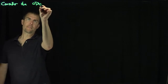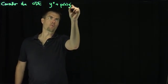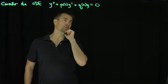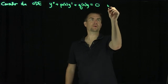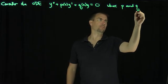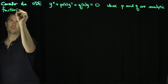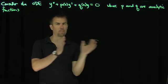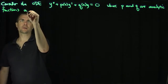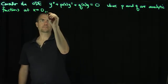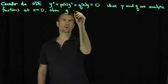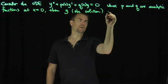Hello, students. In this video, we'll prove that a second-order differential equation has a power series expansion in an interval around an ordinary point. Let's consider the ODE: y double prime plus p of x, y prime, plus q of x, y equals 0. And let's assume that p and q are analytic functions, which means that p and q have power series in a neighborhood of the origin. We're going to do this in the neighborhood of the origin — you can shift this to any ordinary point. If p and q are analytic at x equals 0, then y, the solution, is analytic at 0 as well.